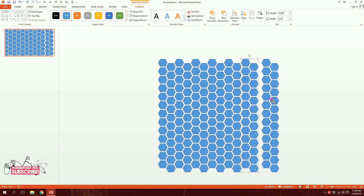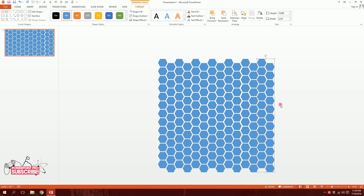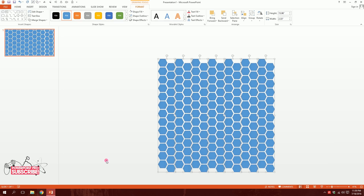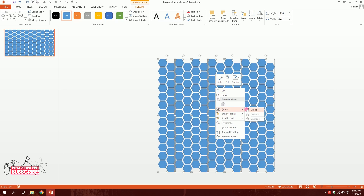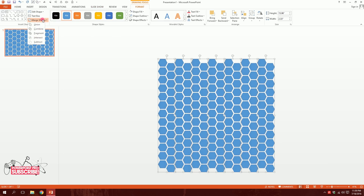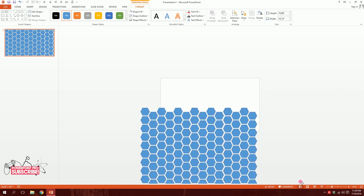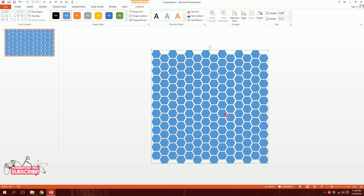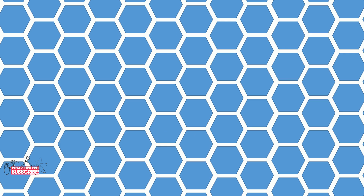Make sure everything is perfectly aligned and your hexagonal shape grid is ready. Put all the pieces in the correct position, then drag over all of them. You can group them together or, better, go to Format and merge them together.